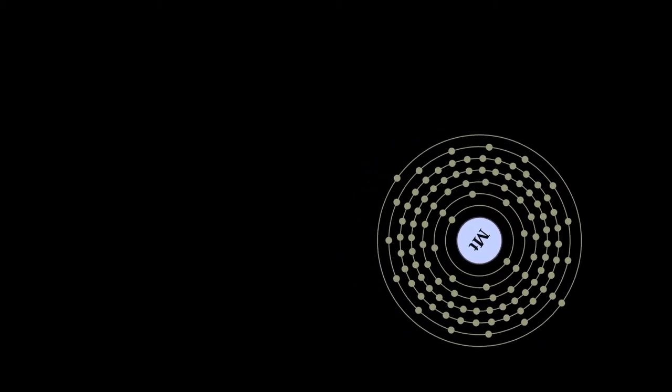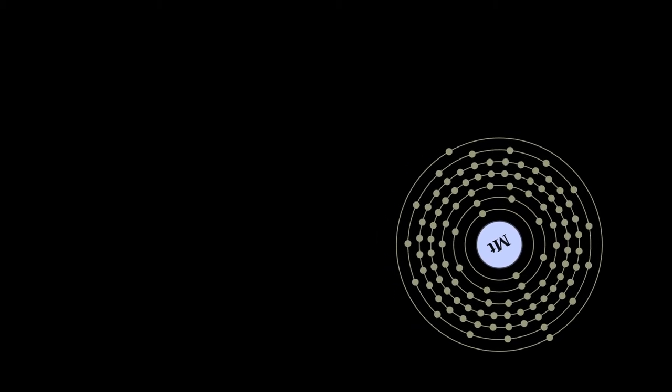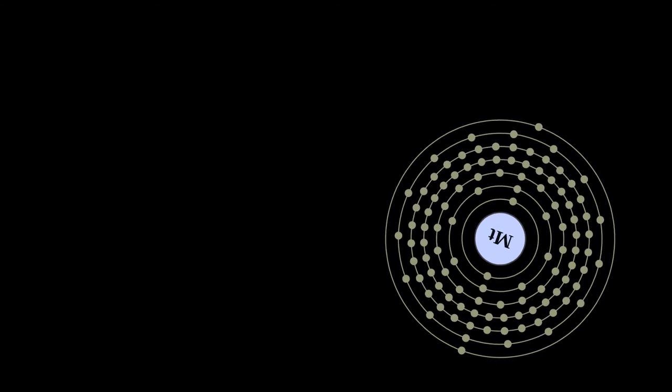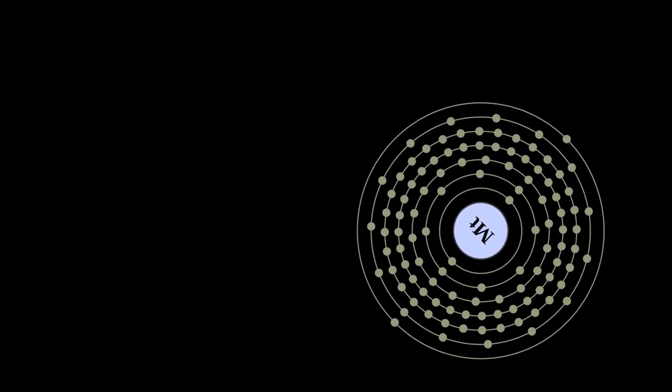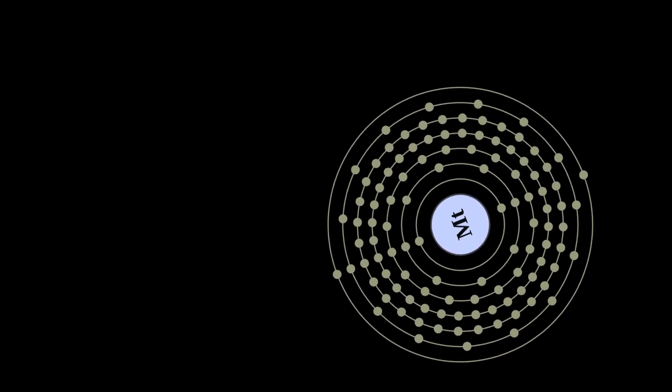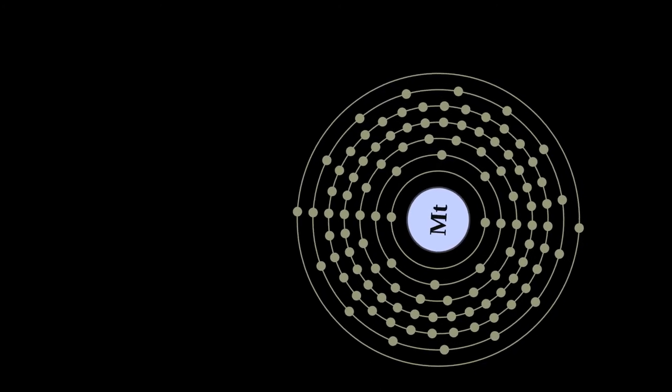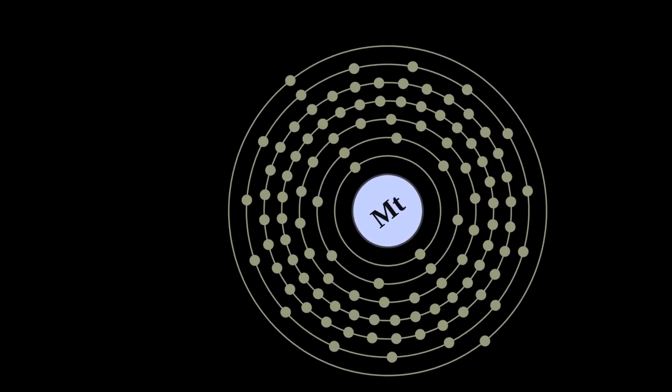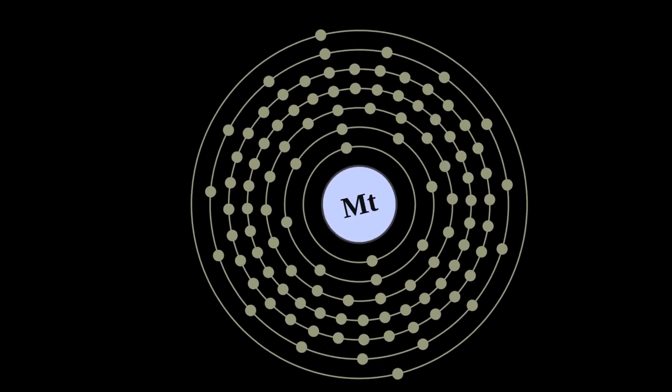Meitnerium is the first element on the periodic table whose chemistry has not yet been investigated. An unambiguous determination of the chemical characteristics of Meitnerium has yet to be established due to the short half-lives of Meitnerium isotopes and a limited number of likely volatile compounds that could be studied on a very small scale.